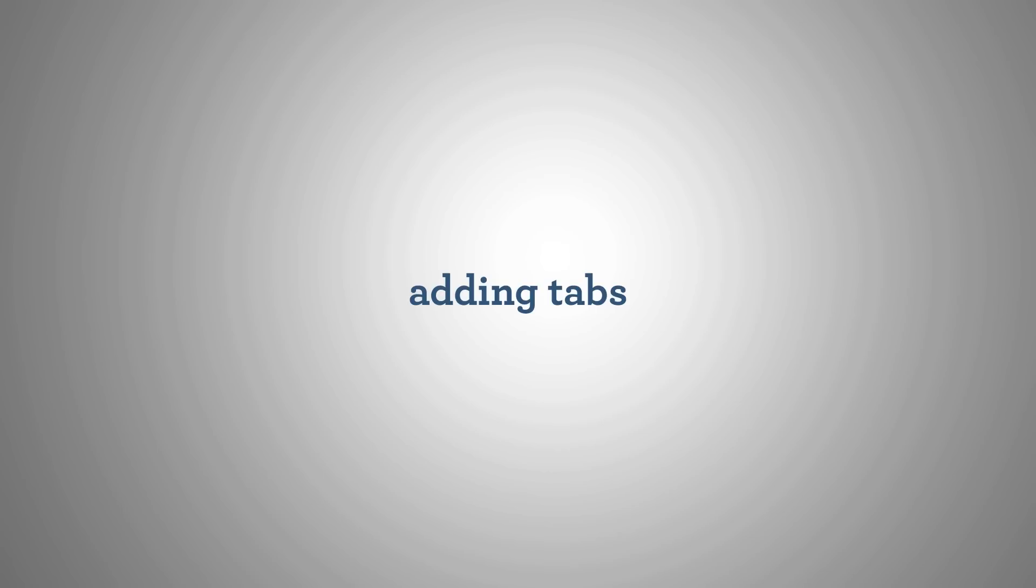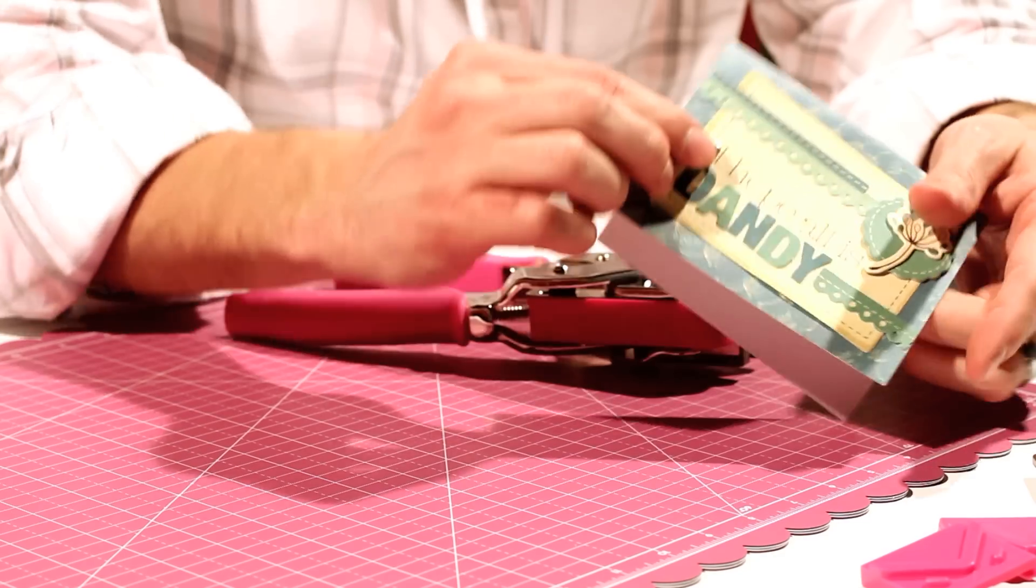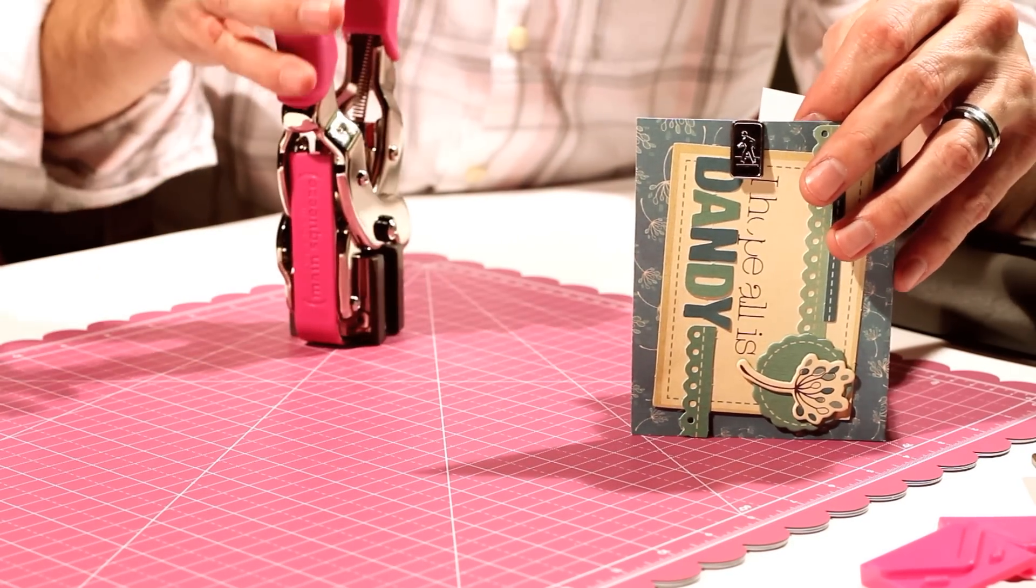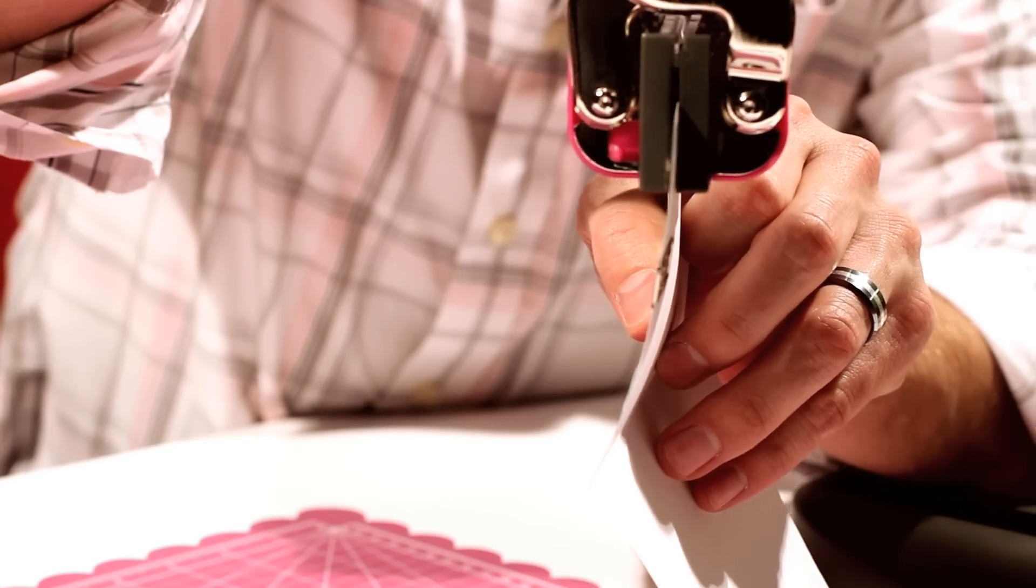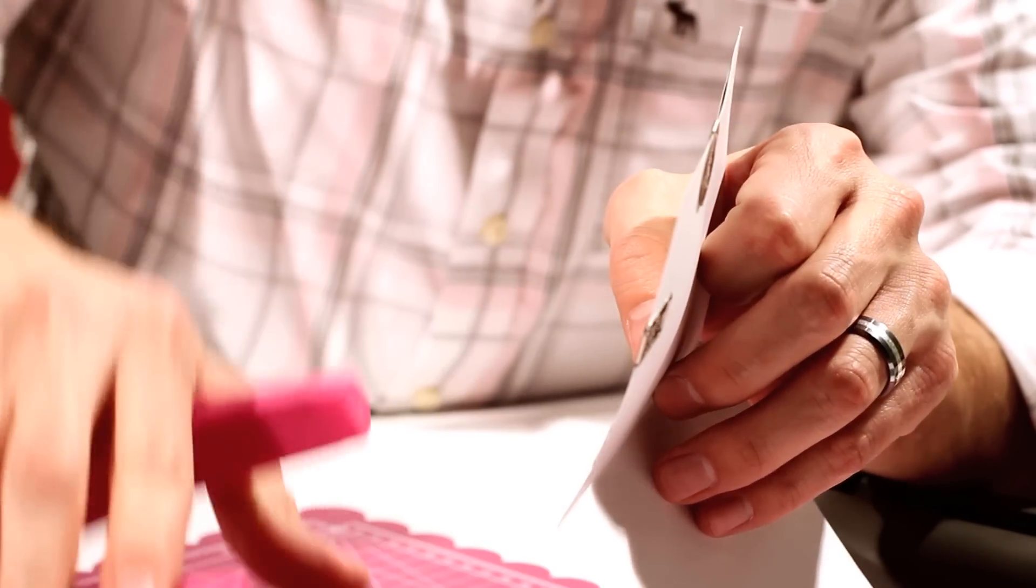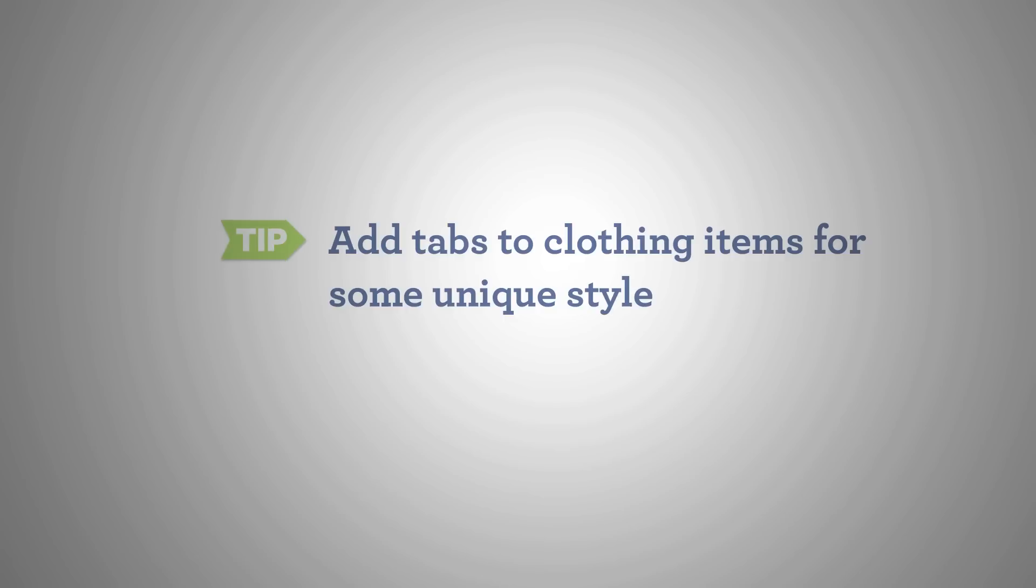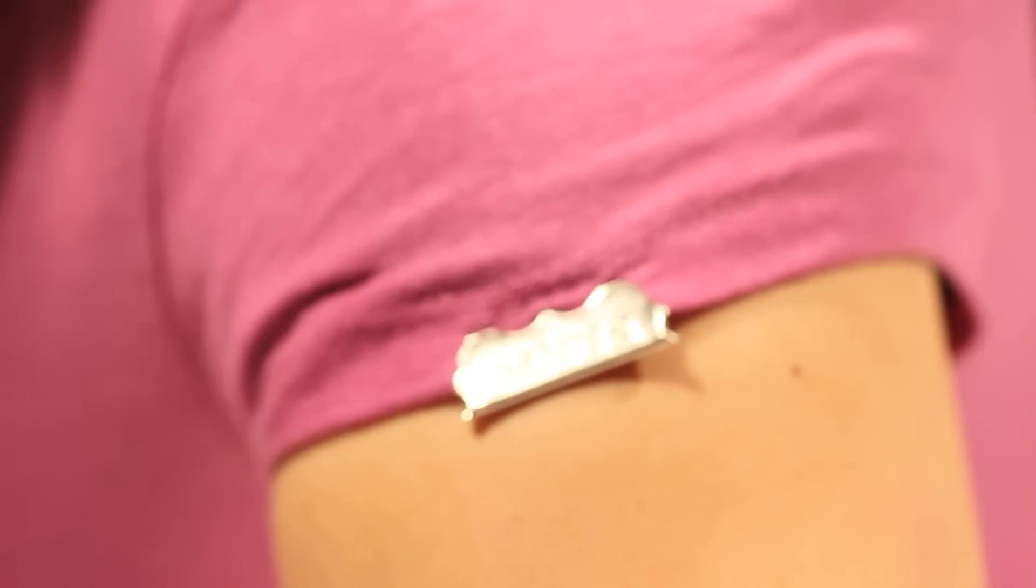Adding a tab with the Cropodile 3 is very similar to setting a corner. Just switch out the plates and place the tab in the desired location on the edge of your project. Then, take the tool and align the tab in between the plates and give it a good squeeze. You'll be able to add tabs to paper, cardstock, chipboard, or even clothing like hats and shirts.